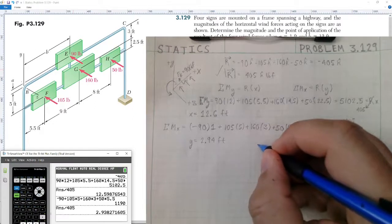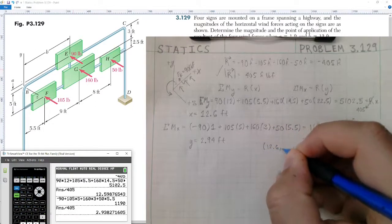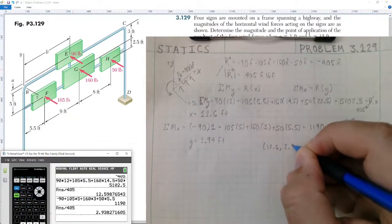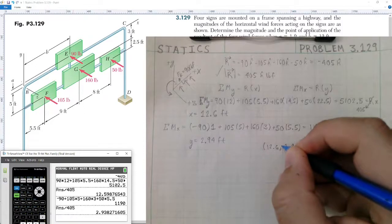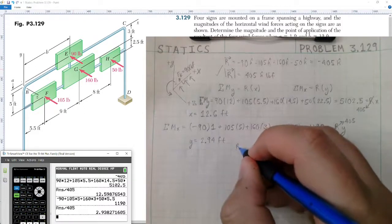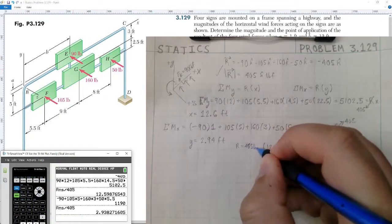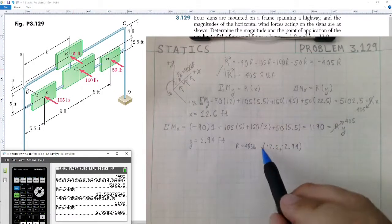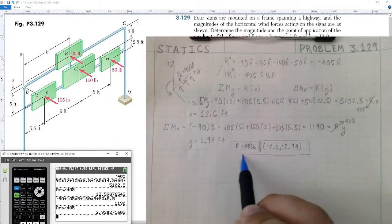So we have our coordinate for the resultant. We would have it at 12.6 comma negative 2.94. And our resultant magnitude is 405 pounds of force. So here is our answer for number 129.